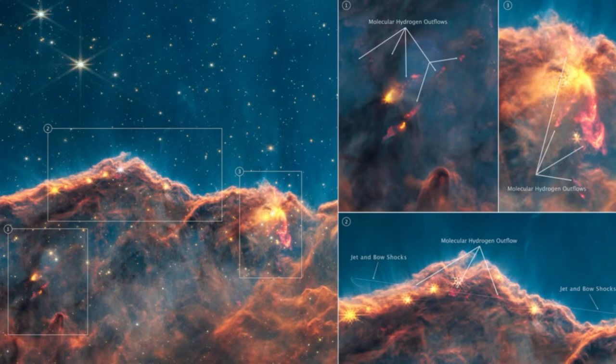Accretion is a messy process, however, and most stars in this phase spit out some of the material, forming jets and outflows like those seen by Webb.